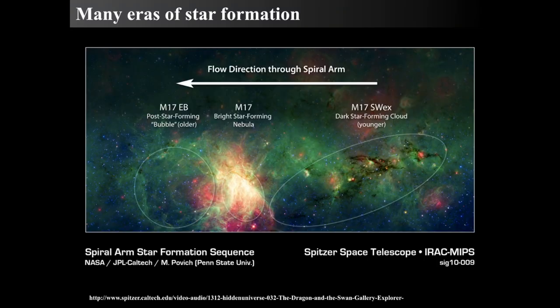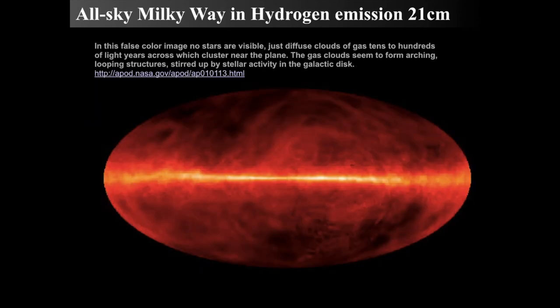That would show the many eras of star formation by looking down a spiral arm. This work was a result of Povich at Penn State University, utilizing NASA JPL's Spitzer Space Telescope with the IRAC MIPS instrument. Fascinating study of what it looks like down inside a spiral arm.